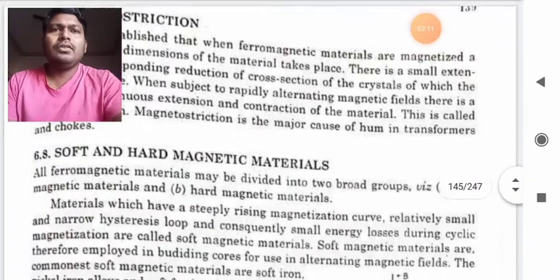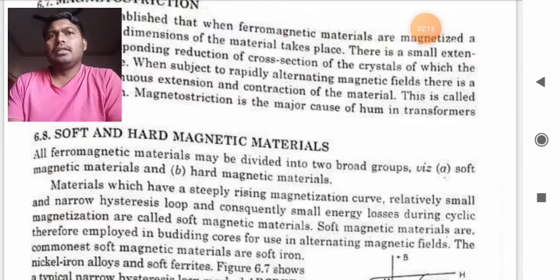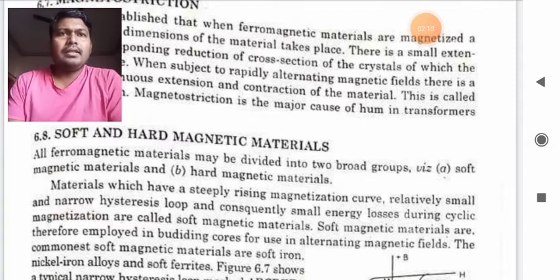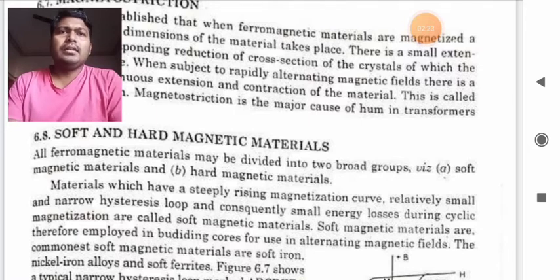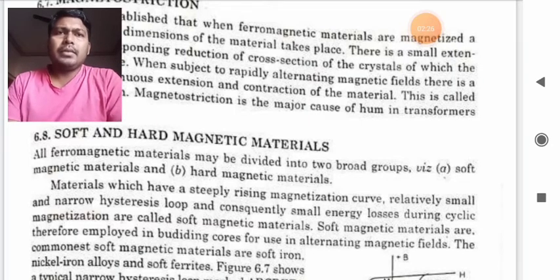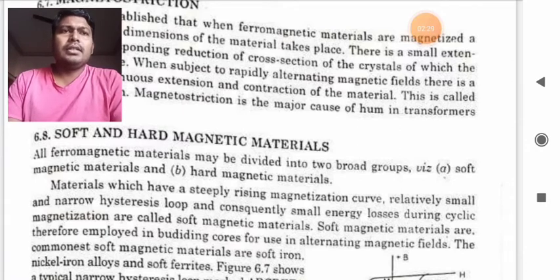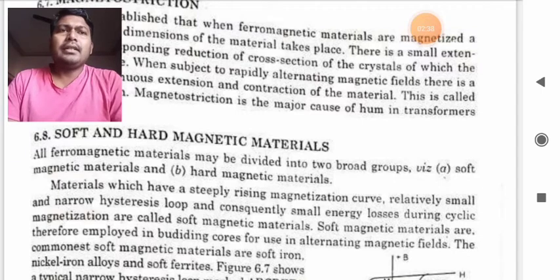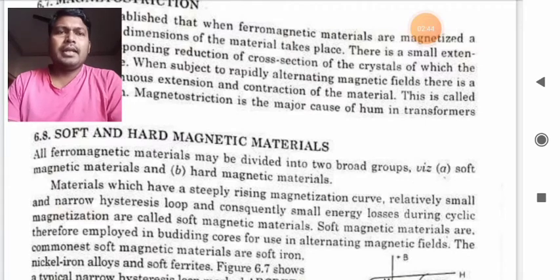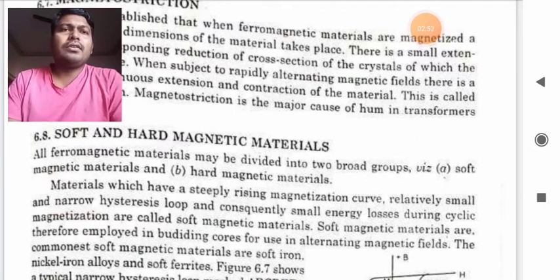Now soft and hard magnetic materials. There are materials which can be classified into hard and soft magnetic materials. All magnetic or ferromagnetic materials can be divided broadly into two groups that is soft magnetic materials and hard magnetic materials. Materials which have a steeply rising magnetizing curve, relatively small and narrow hysteresis loop and consequently small energy loss during cycle magnetization are called soft magnetic materials.